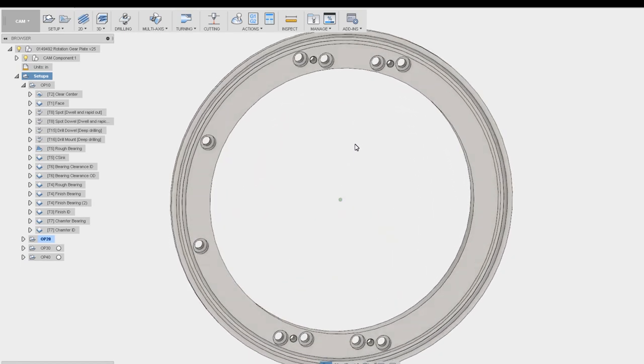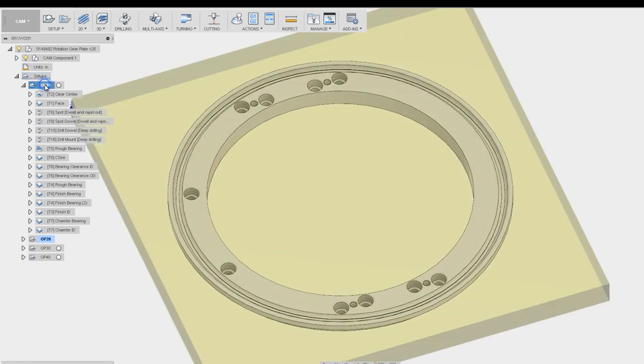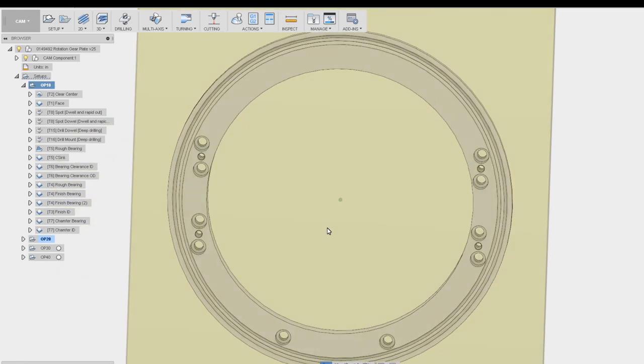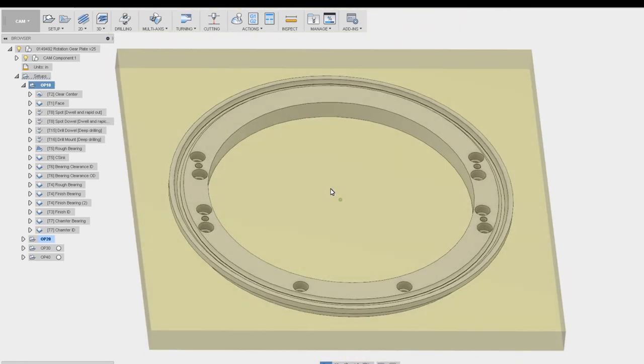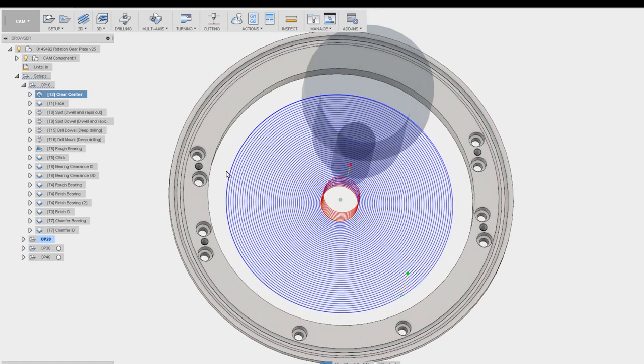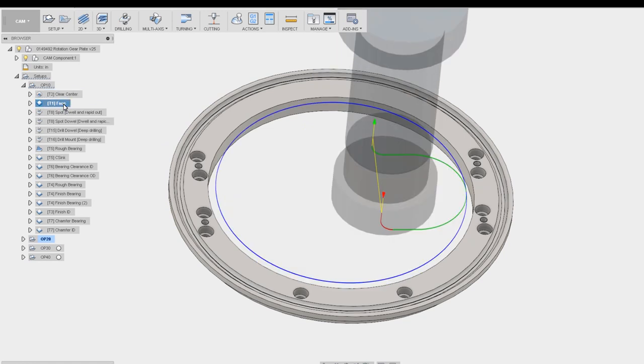We're going to machine this part in two setups and four operations. We're going to start with OP10, and we're just going to mill this out of a piece of plate stock again, just like the last part. We are going to clear the center out using a three quarter inch roughing mill. Then after the center's gone, we're going to face this edge here with our two inch face mill.